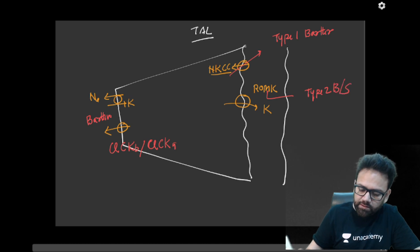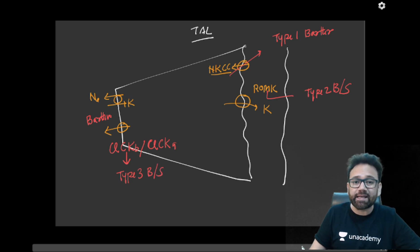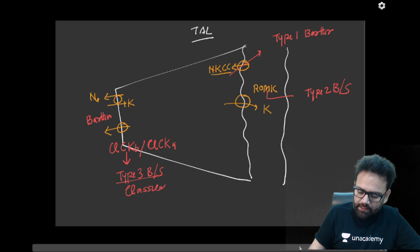If there is mutation of CLCKB, it is called as type 3 Bartter syndrome. And if there is mutation of Bartin, then it causes type 4.